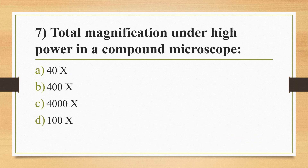Question 7: Total magnification under high power in a compound microscope. Option A: 40x. Option B: 400x. Option C: 4000x. Option D: 100x. Answer is Option B, 400x. In a compound microscope, total magnification is the product of the objective and ocular lenses. The high-power objective is 40x and the ocular lens is 10x, giving 40x × 10x = 400x.